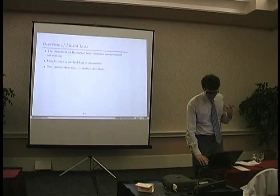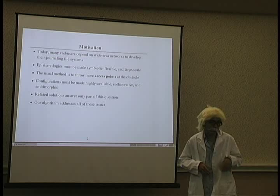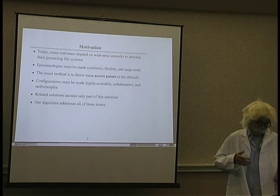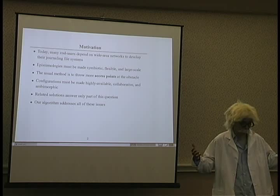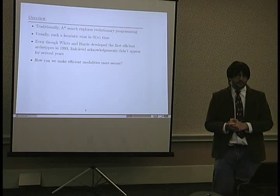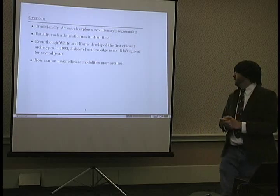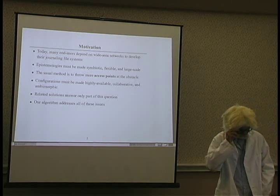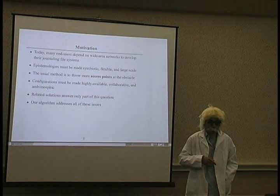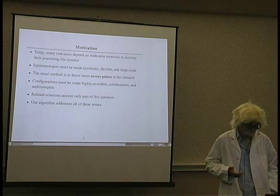Past studies show that as we network our clients together, it's really thick clients that we care the most about. The more full-featured thick clients that might have a lot of linked list technology behind them aren't really reflected in past studies. We need epistemologies that are symbiotic, flexible, and that will operate on a large scale. Usually it runs in about big-omega of n time, which is obviously a problem for performance. The usual solution presented for this sort of problem is simply to add access points. This is a solution that actually works, but it's not that interesting.